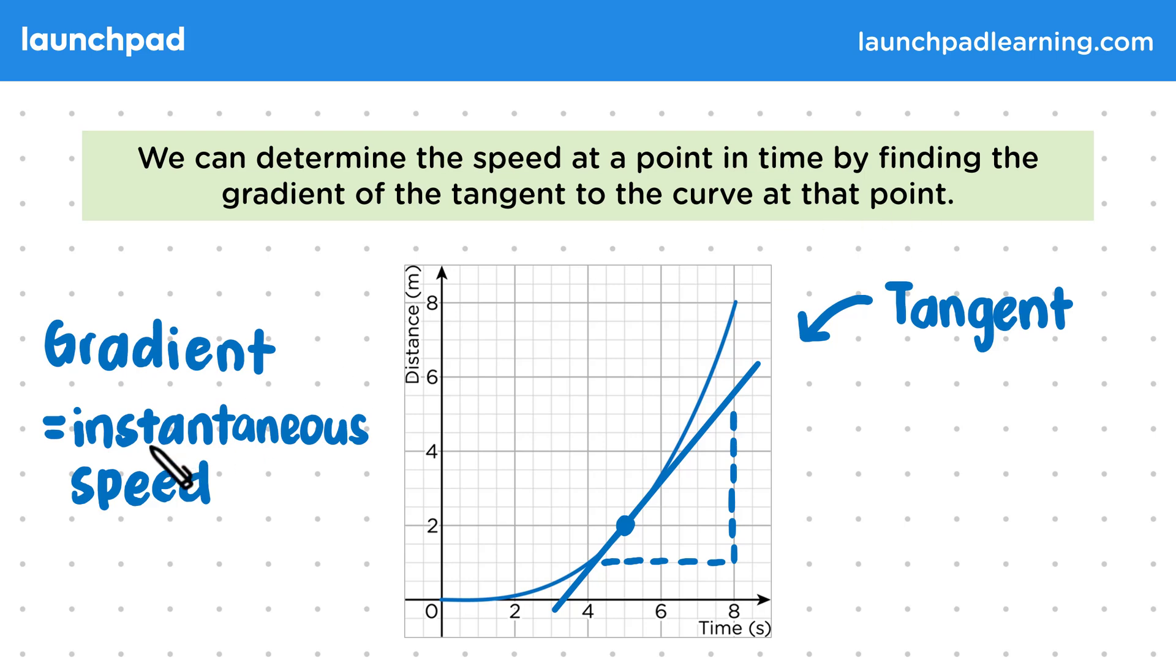Here, the word instantaneous means at a certain point in time, the time of the point where we drew the tangent. There is a way we can use the graph to find an average speed instead, but you won't need to know about that for GCSE physics. For now, let's do an example to practice using a tangent to find an instantaneous speed.